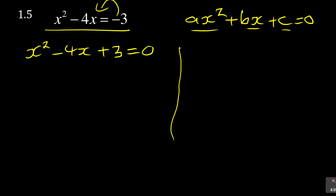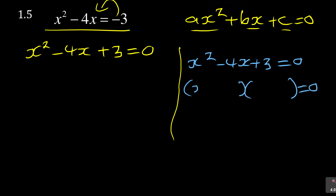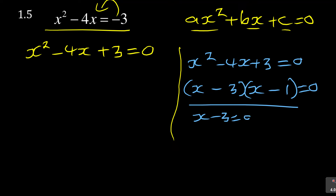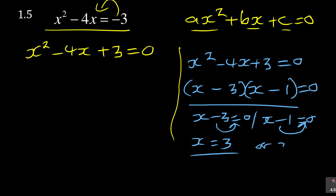One approach is to open two brackets: (x )(x ). You need two numbers that multiply to give 3 — that's 3 and 1 — and add to give negative 4, so both must be negative. You get (x minus 3)(x minus 1) equals zero, giving x equals 3 or x equals 1. That works fast for some learners.